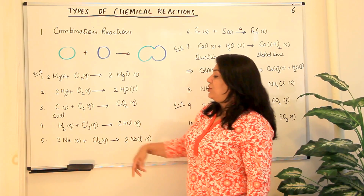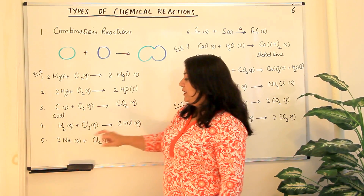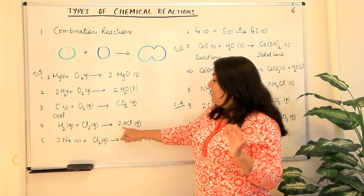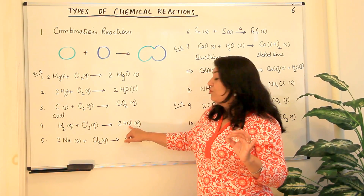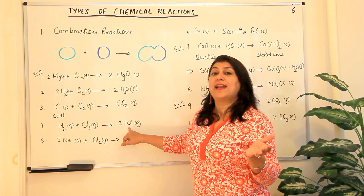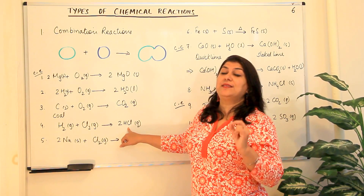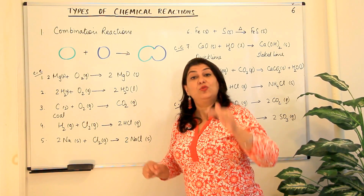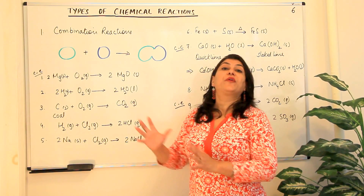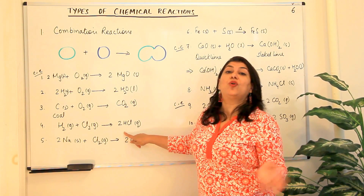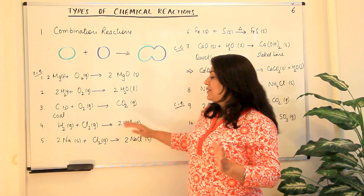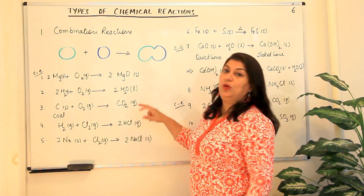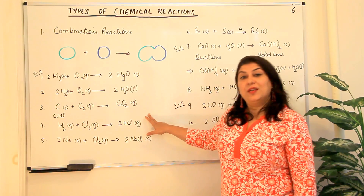The next reaction has hydrogen and chlorine in their gaseous forms joining together to give you hydrogen chloride gas. HCl does not behave as an acid as long as it is in the gaseous state; when you dissolve it in water, that aqueous solution is when we call it hydrochloric acid. Hydrogen and chlorine — two different elements — combined together to give one product, therefore this is a combination reaction.